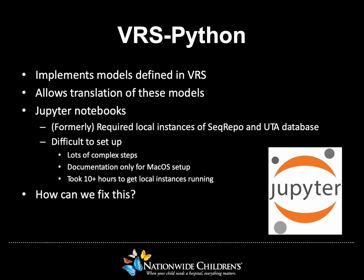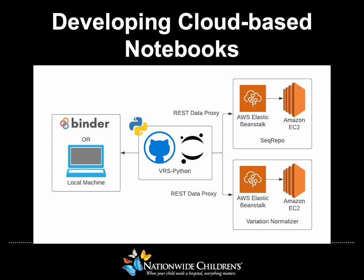So, what do we do to fix it? To overcome the barriers for introduction to VRS, we developed cloud-based notebooks to educate potential adopters. We eliminated the need for users to have locally running instances of SeqRepo and UTA by hosting those dependencies on AWS Beanstalk apps on EC2 instances. VRS Python now uses a REST data proxy to retrieve information from SeqRepo and an additional REST data proxy to retrieve the needed information from UTA from our lab's variation normalizer. VRS Python's Jupyter notebooks are hosted by a third party called Binder, where a user can go directly to and explore the notebooks with no installation required.